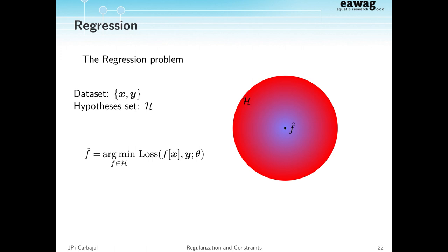Now we're going to talk about regression. The regression problem is: we define a hypothesis set, usually functions, and we have some input-output data — supervised methods. We define a loss function, which for most of our methods we'll ask to be convex, though it could be non-convex. The loss function puts a gradient on the hypothesis set, and we find either a minimum or maximum.